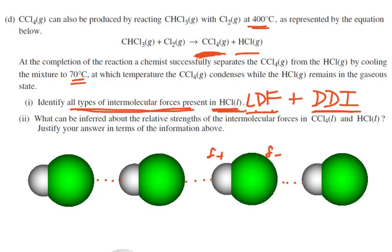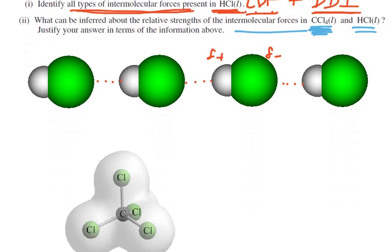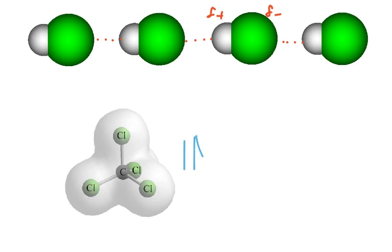So HCl has London dispersion forces and dipole-dipole interactions — no hydrogen bonding, even though there's hydrogen present. Now, what can be inferred about the relative strengths of intermolecular forces in CCl₄ liquid versus HCl liquid? Since CCl₄ condensed first at 70 degrees while HCl remained gaseous, CCl₄ must have stronger intermolecular forces than HCl.